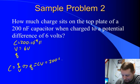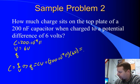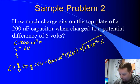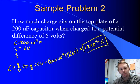That's 200 times 10 to the minus 9 farads times 6 volts, which gives us 1.2 times 10 to the minus 6 coulombs, or 1.2 microcoulombs.